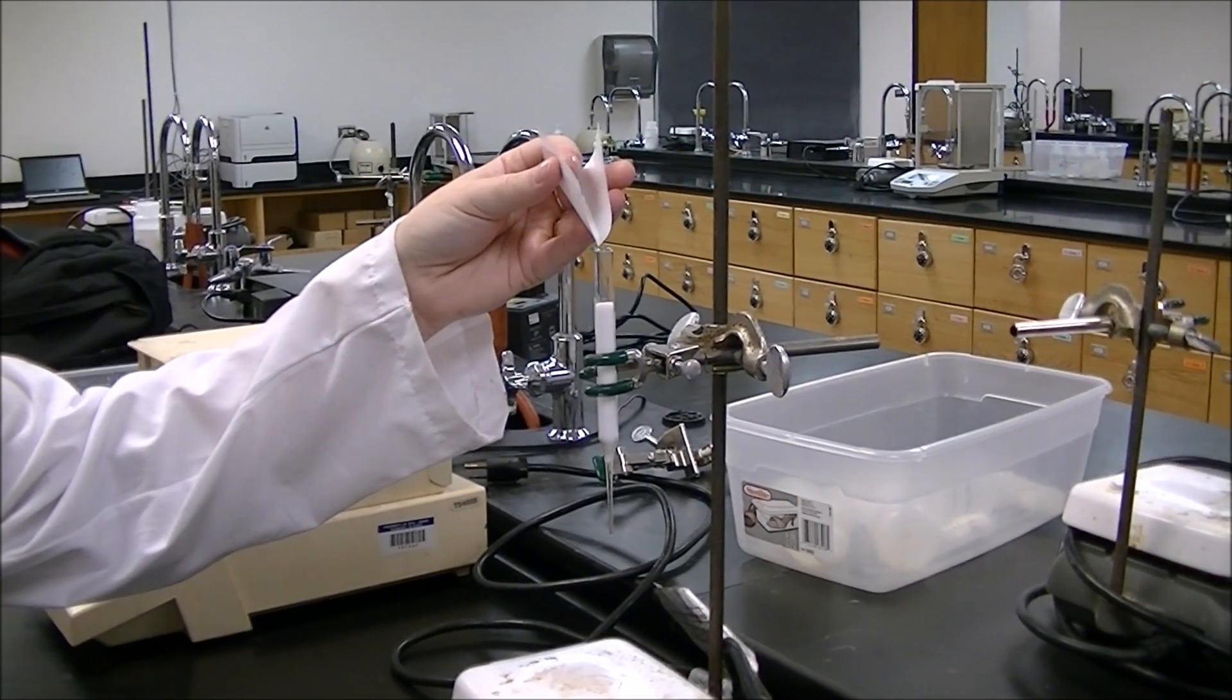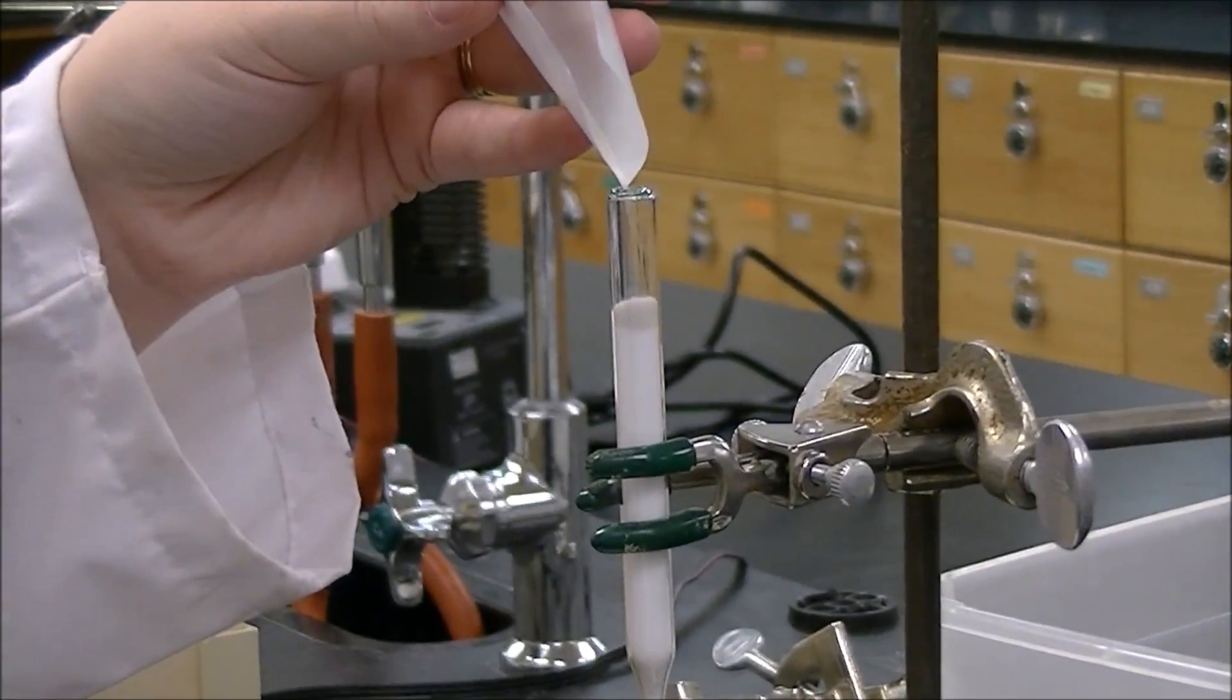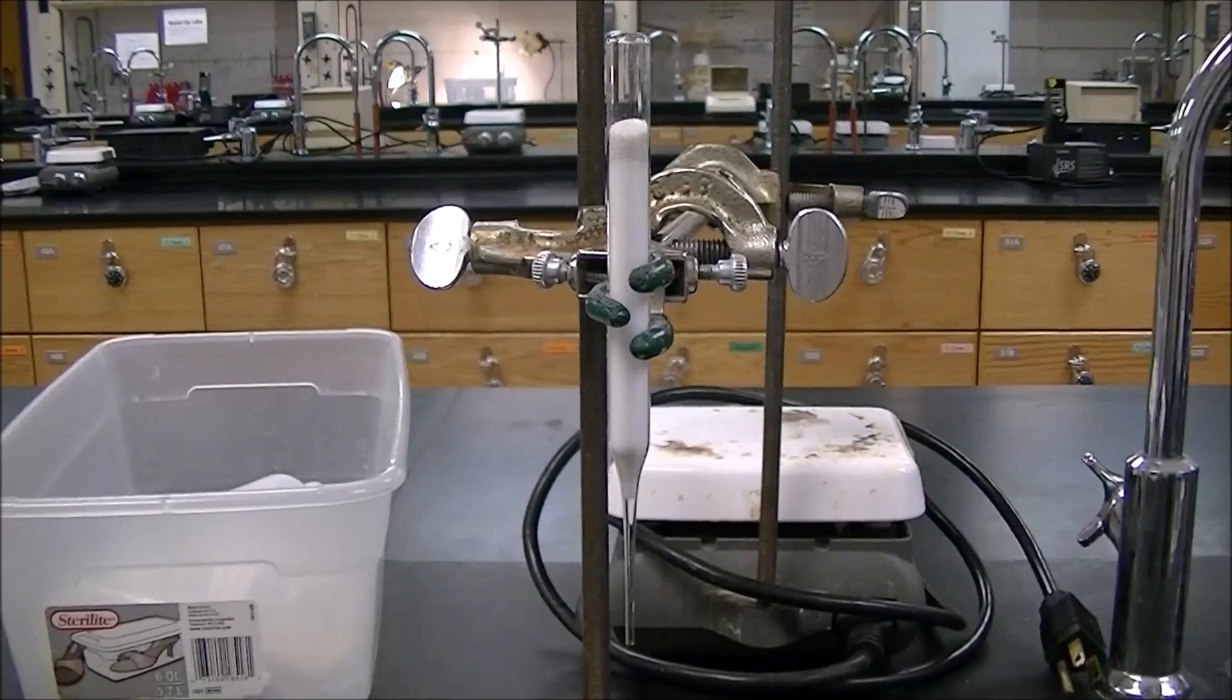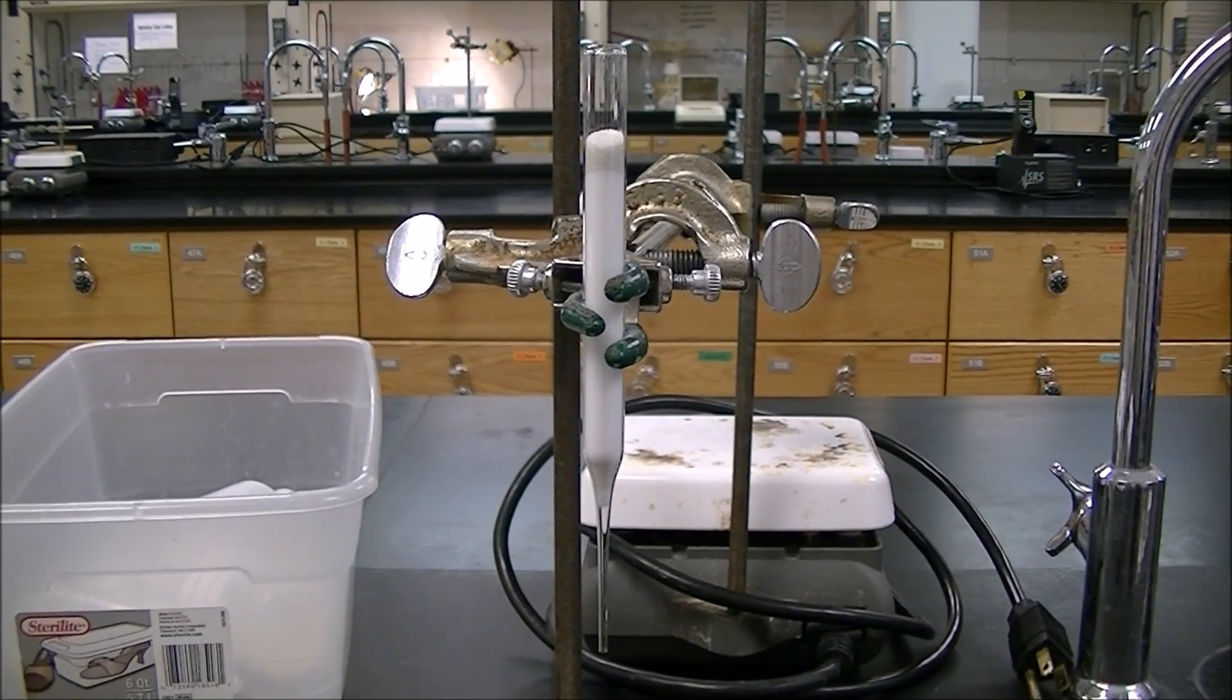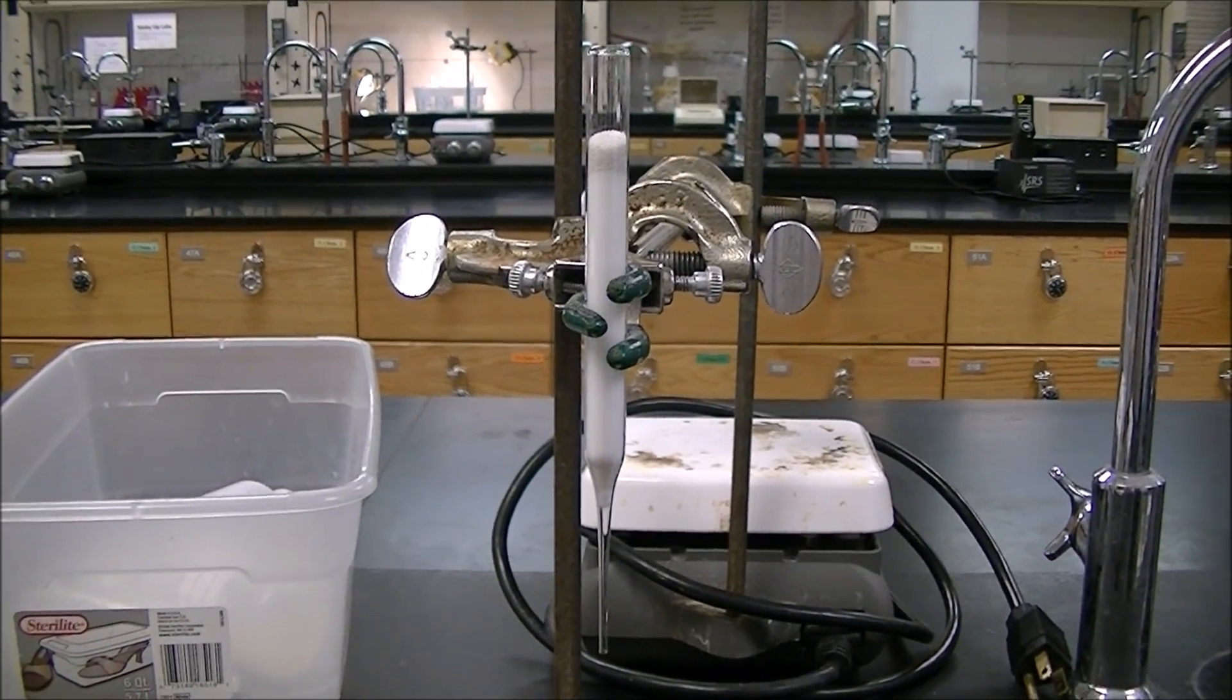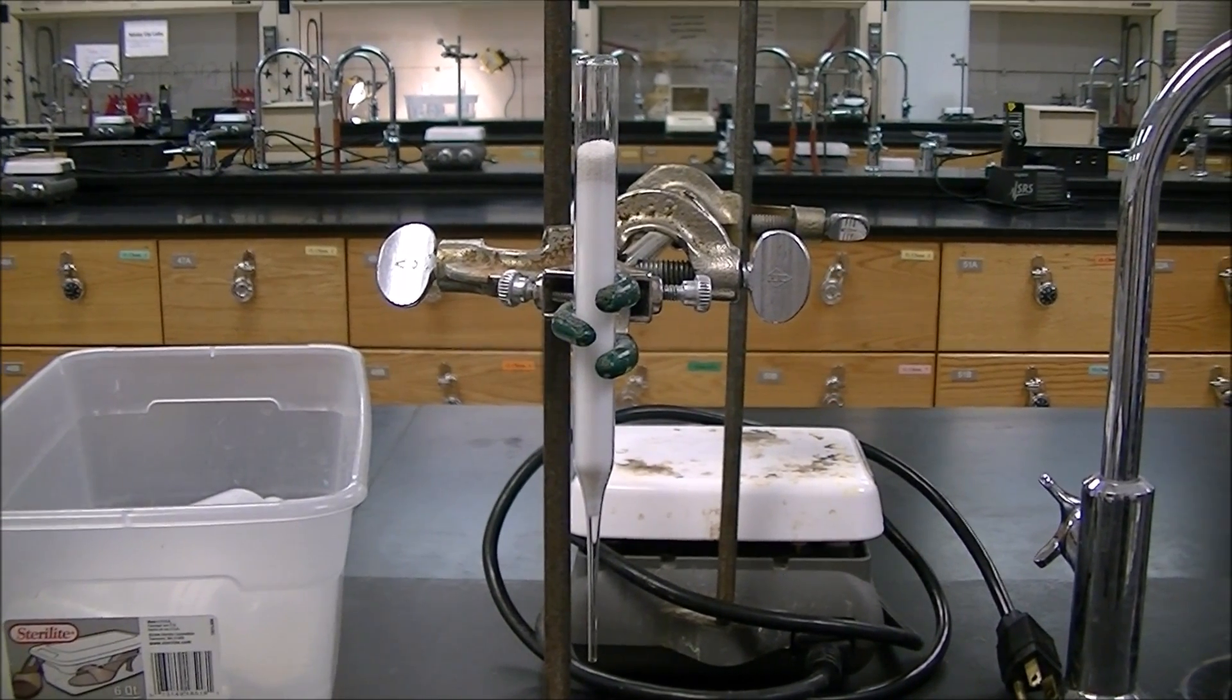Now we'll top the column with about 2 millimeters of sand. Now let's run through this to understand why we've set it up the way we did. The plug and the sand at the bottom prevent the silica from oozing out the bottom. And then the sand at the top prevents the silica from splashing when you add your mixture.